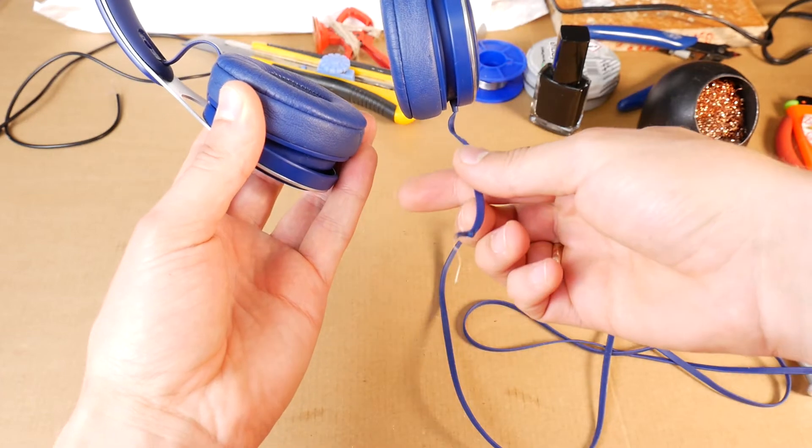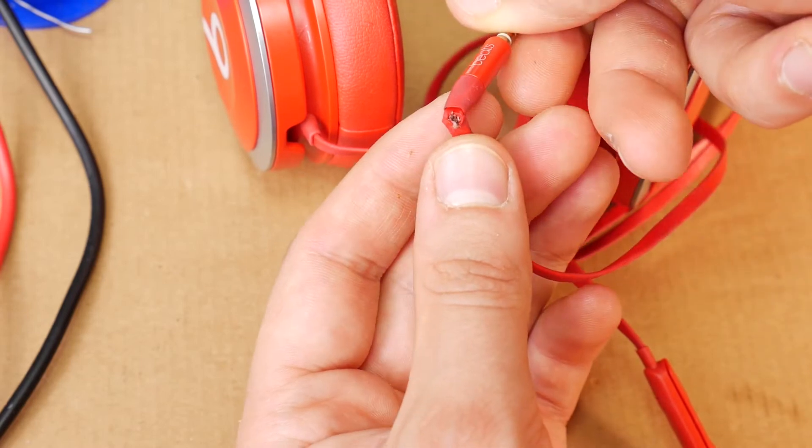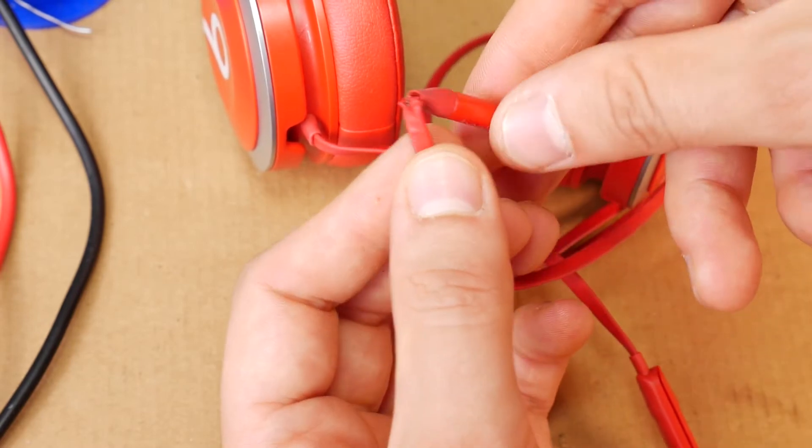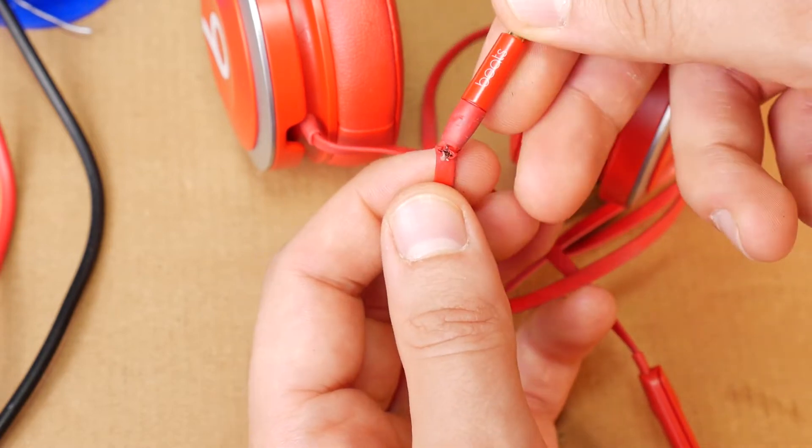Last time I showed you how to replace a broken aux cable on Beats EP headphones. A typical problem for all wired headphones is that sooner or later the cord connection to the 3.5mm plug breaks and the headphones no longer produce left or right side sound.